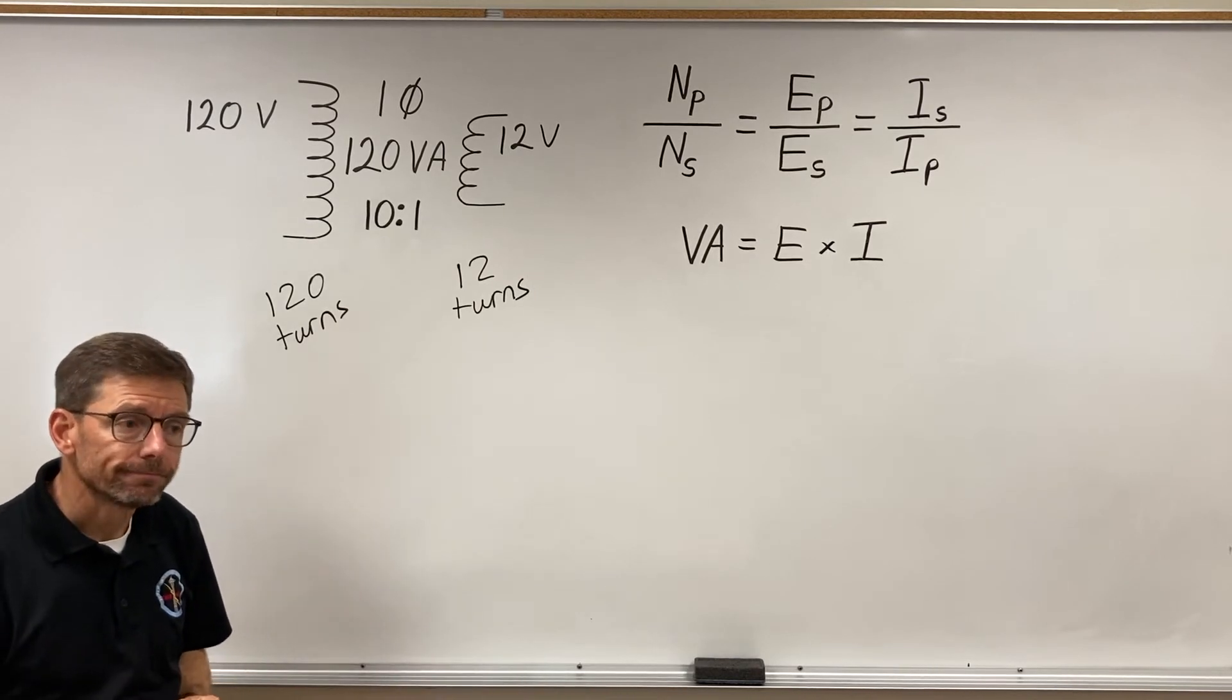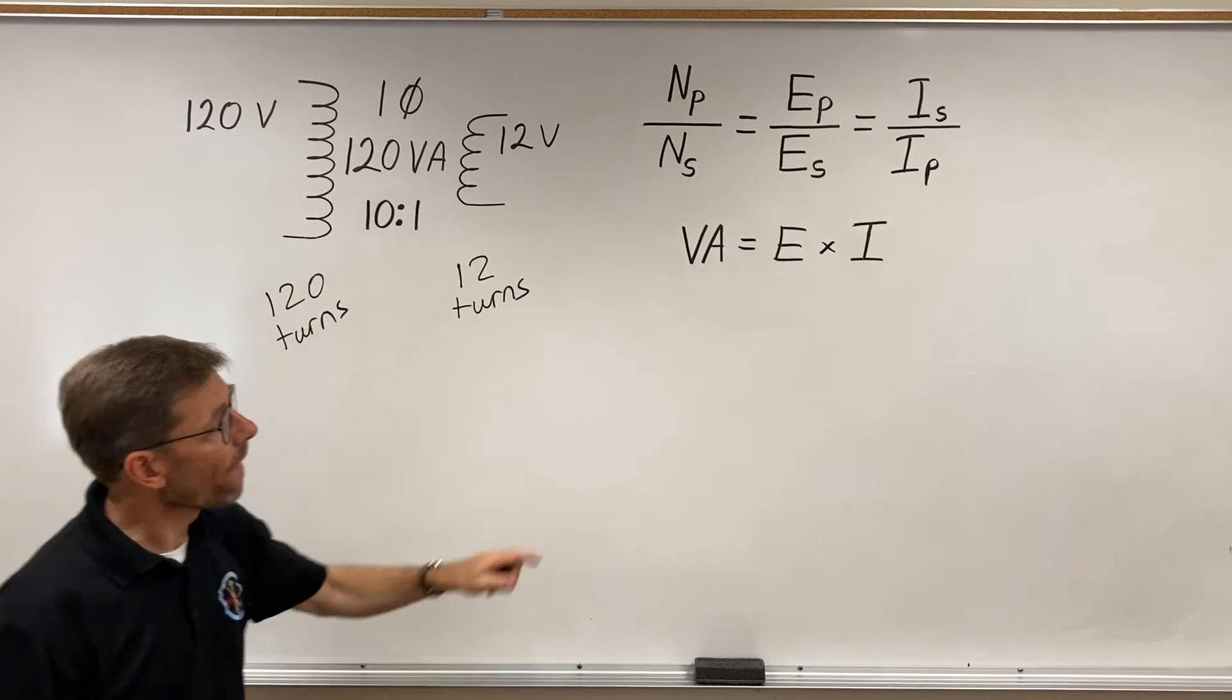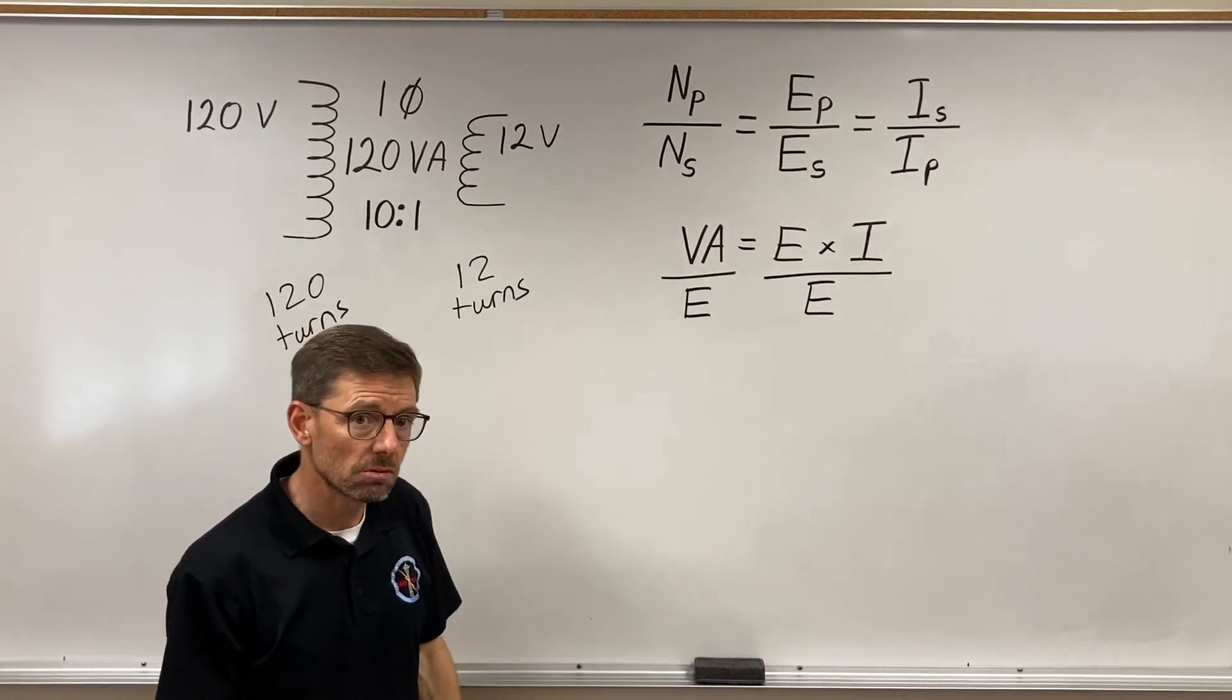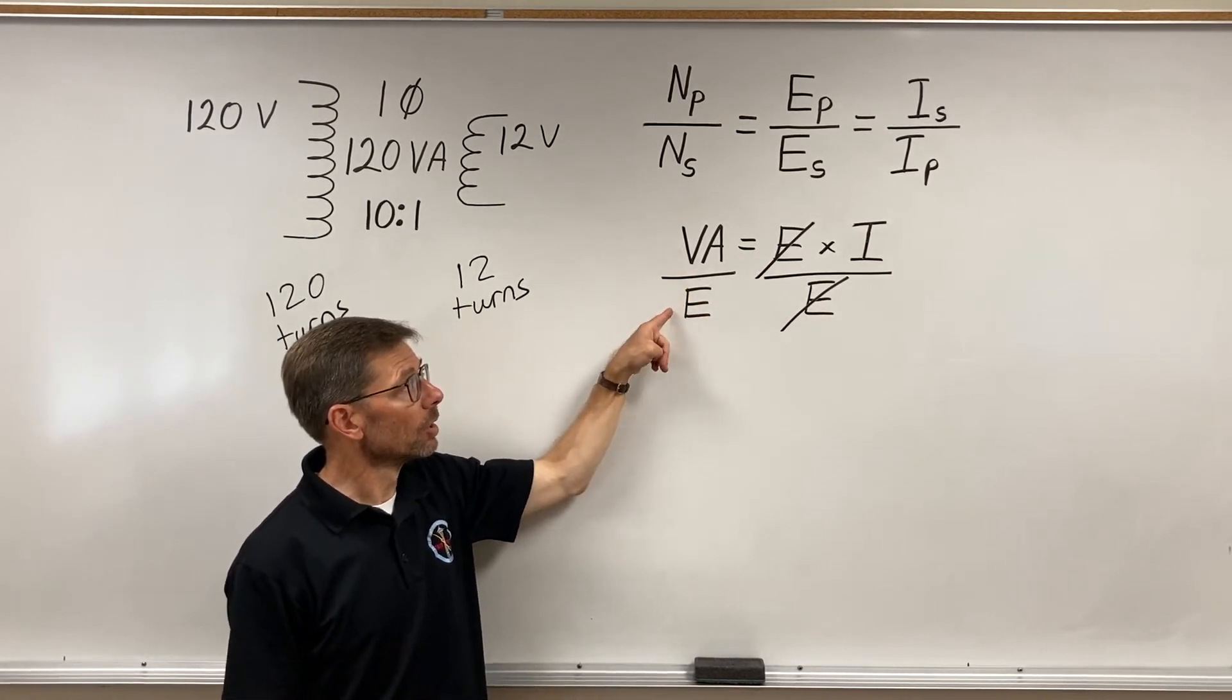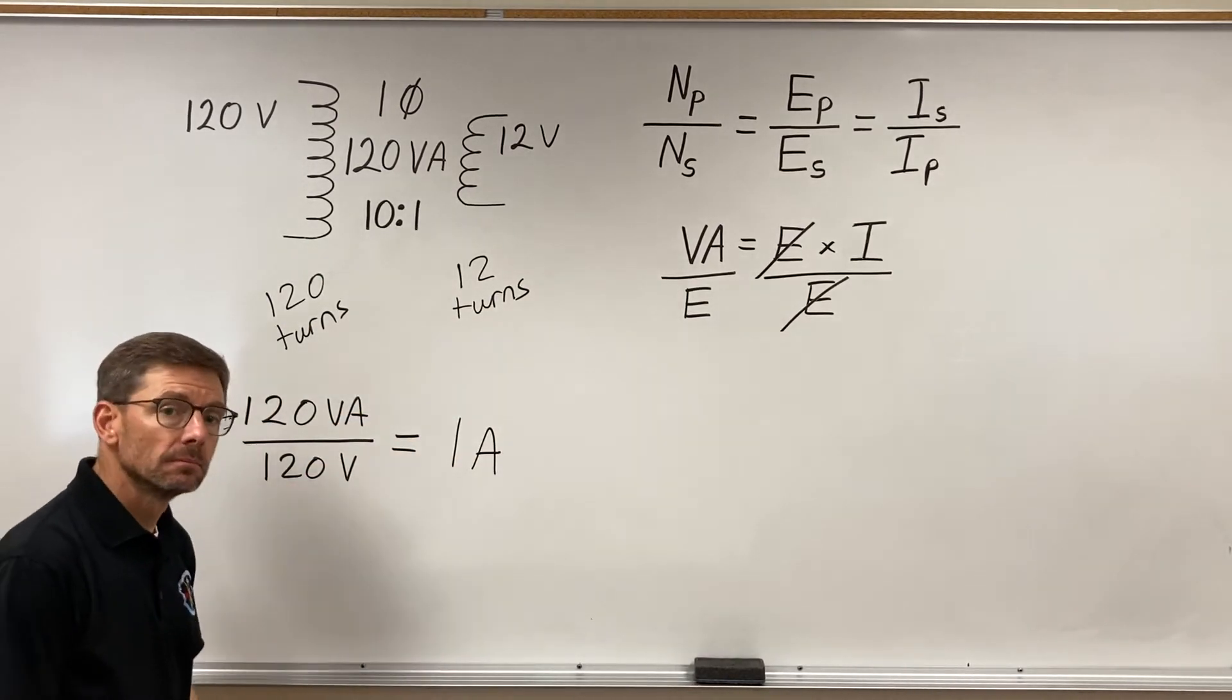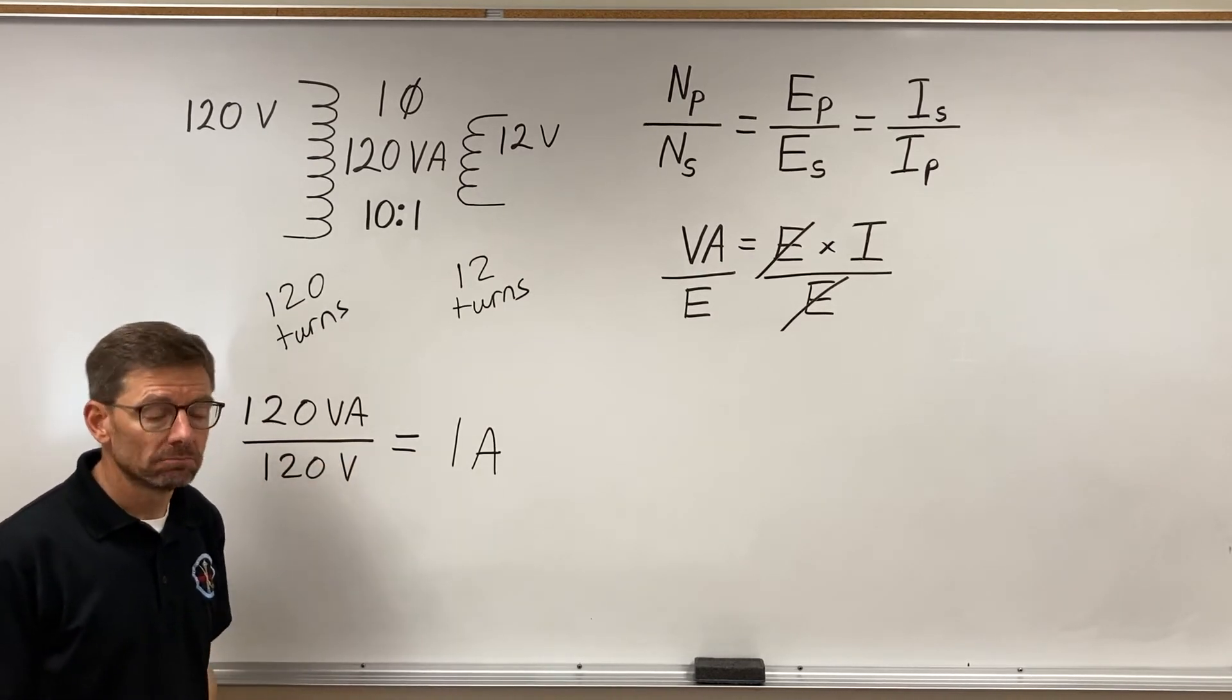So, then we've got to get to amperage. So, if my power is 120 volt amps here, and I have 120 volts, how do I figure my current? Well, I simply divide both sides by the voltage. It cancels out on the one side, and I'm left with volt amps over volts gives me current. So, let's do that for the primary. One amp. That's all the current I can run through with this power rating. If I run more current through the primary, I'm going to exceed the power rating. Not a good thing.